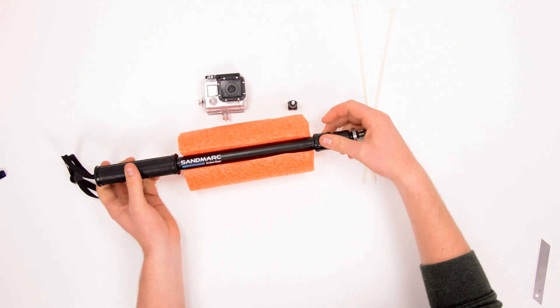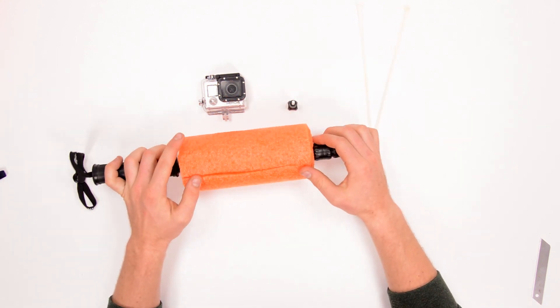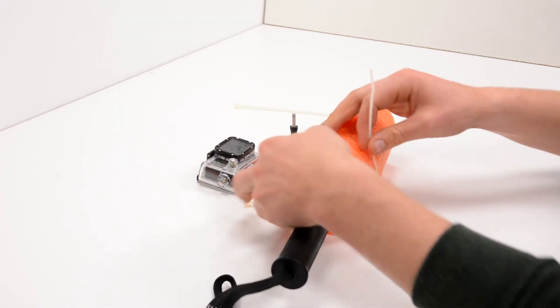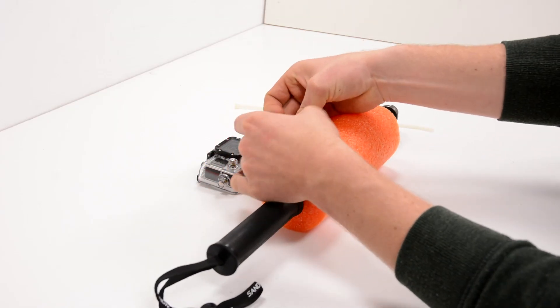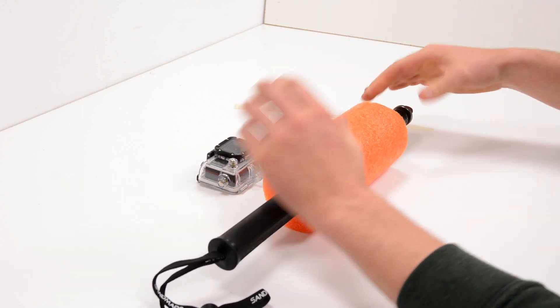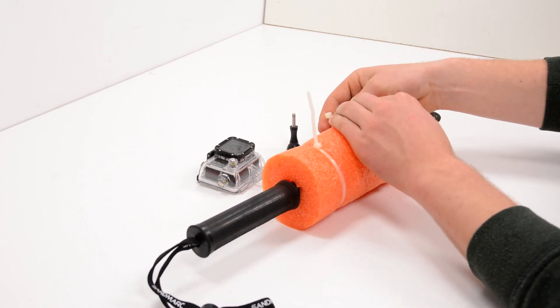I'm going to take my pole now and bring it in the center here, drop it in. And now to make sure this is secure and stop that pole from ever popping out, I'm going to take these two zip ties, wrap them around the pole, tighten them up. And do the same thing over here.